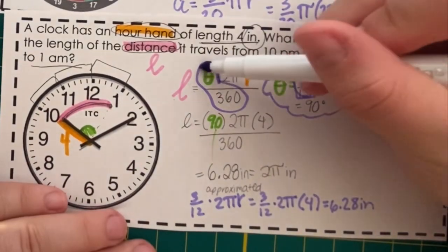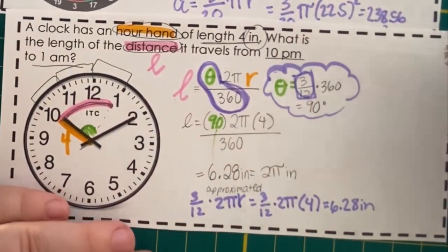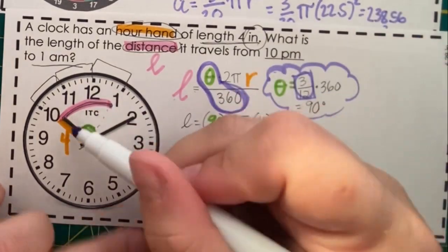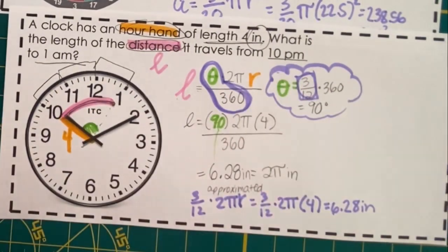So, you can ignore this theta over 360 and instead just use the fraction of the circle that's being taken up.